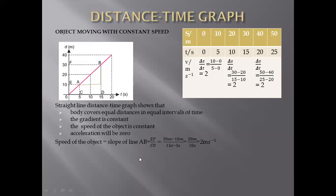In this case the body is moving away from the starting point. For example, a person moving from their house to a shop in a straight line — the distance increases, meaning the person is moving away from the starting point. Whenever distance is increasing, the object is moving away from the starting point.